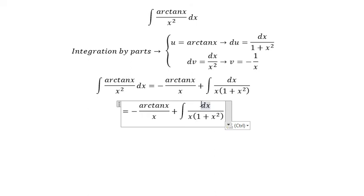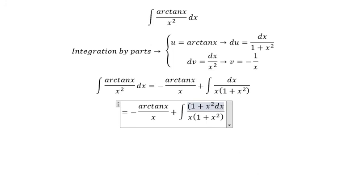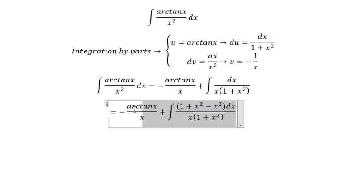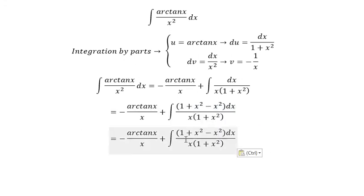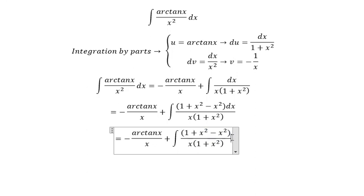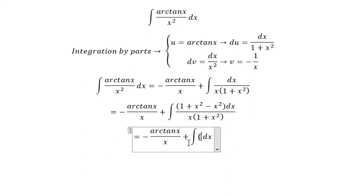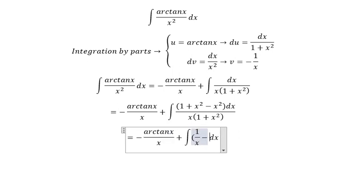On the numerator we have 1. So we have 1 plus x square, that means we need to minus x square. 1 plus x square, x square divided by x. So we get 1 over x minus x over 1 plus x square.